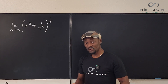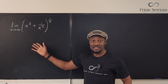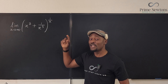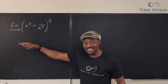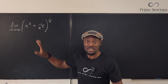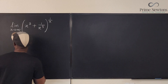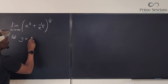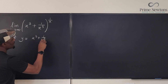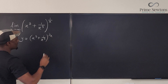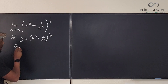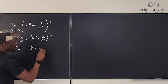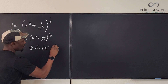In order to use L'Hôpital's rule it is necessary to write this as a fraction. But this doesn't look like a single fraction — this is an exponential expression. So I have to introduce the natural log just to bring this exponent down. I need to say let this whole thing be equal to y. So we say: let y equal x cubed plus 1 over x cubed, raised to the power 1 over x. Now I take the natural log of y. The natural log of y is going to be 1 over x times the natural log of x cubed plus 1 over x cubed.